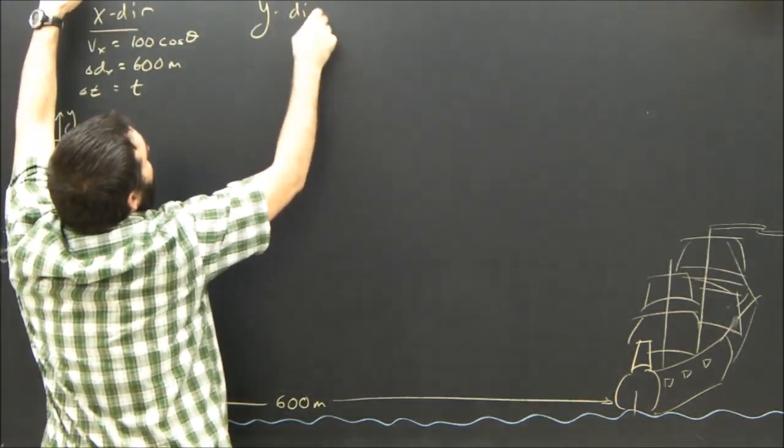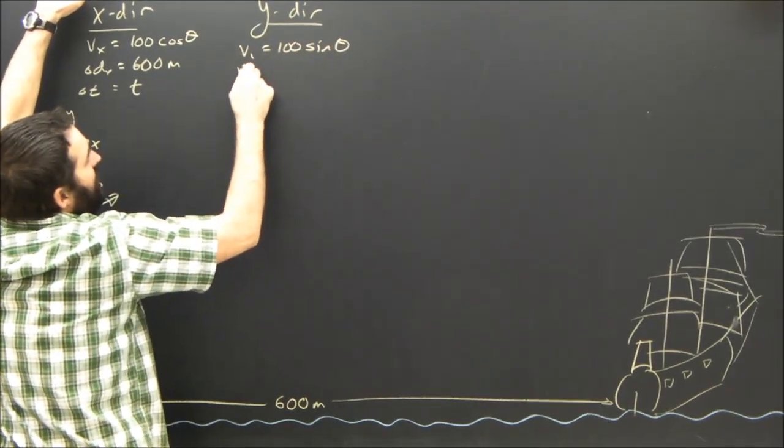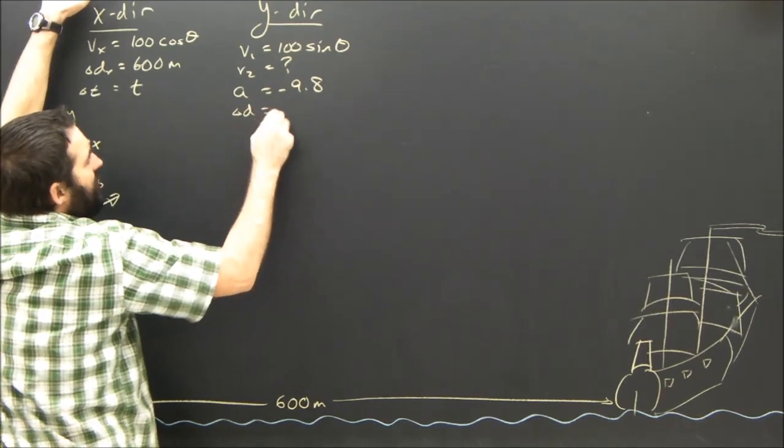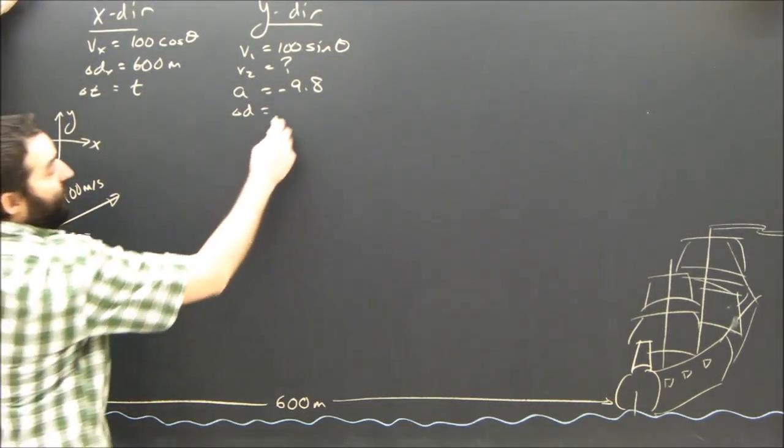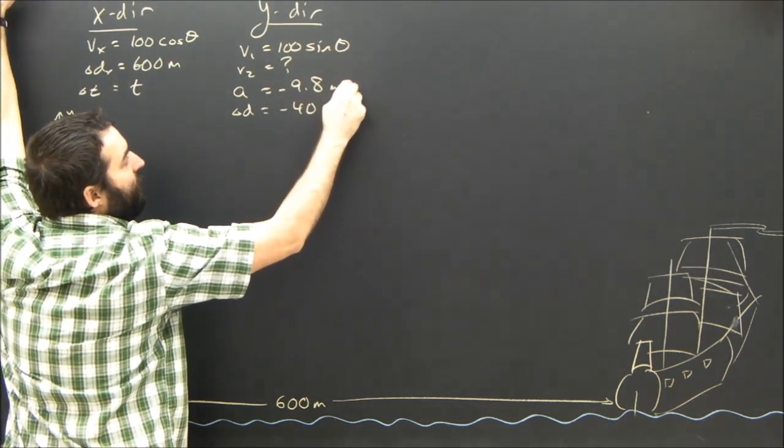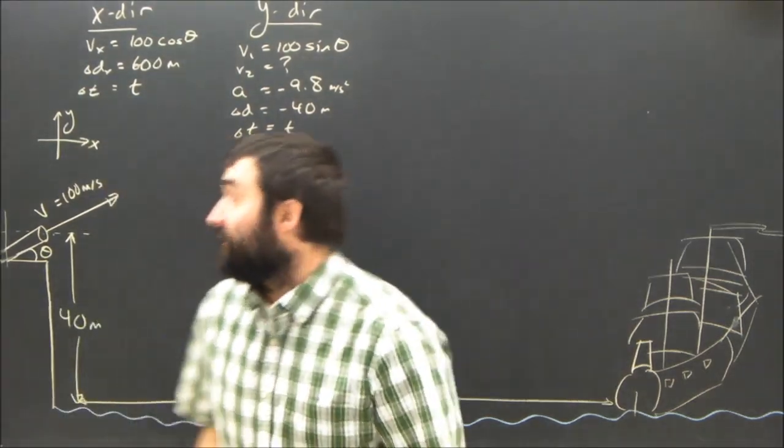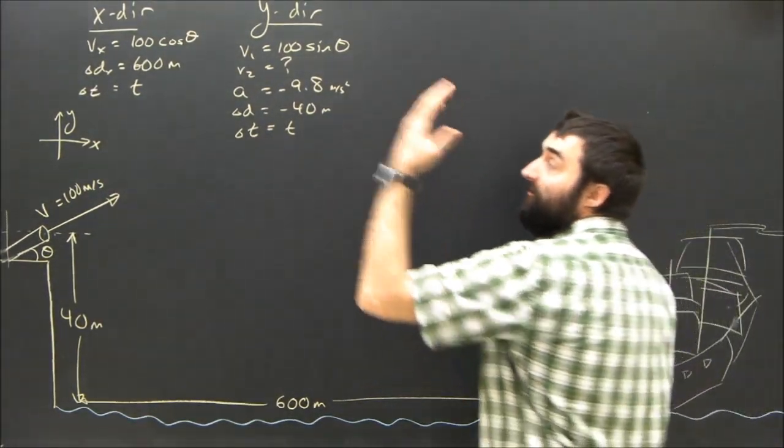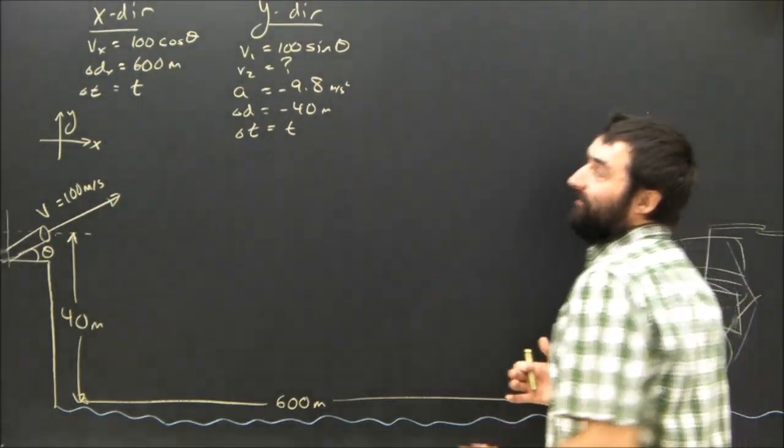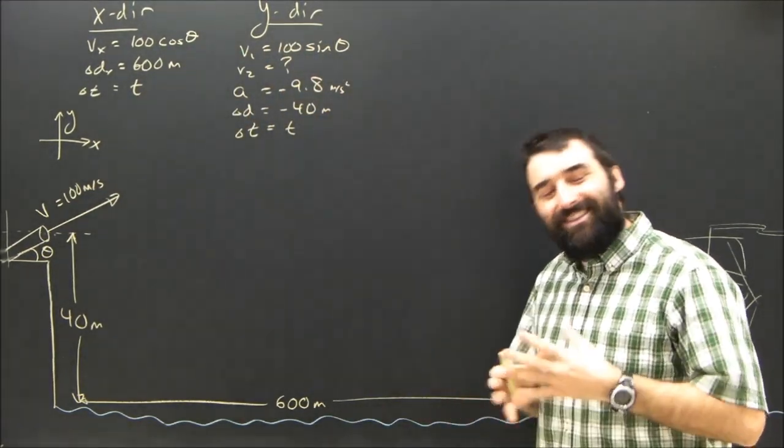In the y direction, I've got v1 is 100 sine theta. V2, I have no idea. The acceleration, I'm going to call negative 9.8. The vertical displacement is 40 down. It travels 40 meters below where it started, so its displacement is negative 40. And the time will simply call t. So, pretty standard start, pretty standard finish, really. I'm going to use vdt, uniform motion formula for the x direction, I'm going to use the big 5 for the y direction. And I'm going to discover that each of them have two unknowns, t and theta.